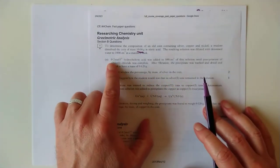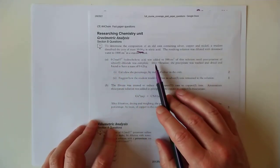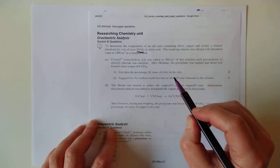in nitric acid. And the resulting solution was then diluted with deionized water up to 1,000 mils in a standard flask. Okay, part A. 0.2 molar hydrochloric acid, not important, but we'll come back to why in a second,